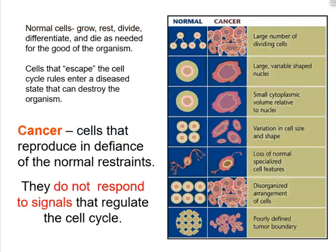This leads to the topic of cancer. Cancer is a disease of the cell cycle because cancer cells reproduce and no longer respond to cell cycle regulators. Normal cells grow, rest, divide, differentiate, and undergo apoptosis when needed. Cancer cells escape these rules. Visually, normal cells have a specific shape and carry out specific functions, whereas cancer cells are very different in size and shape, lose normal functions, and form poorly defined boundaries.